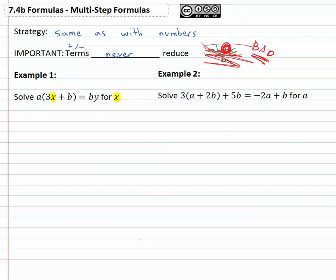While we solved problems with parentheses before, we know if you've got something in front of the parentheses, you have to distribute. So let's clear the parentheses by distributing the a, giving us 3ax plus ab equals by.